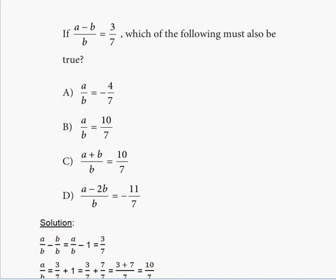It gives you a fraction and it says if a minus b divided by b is equal to three over seven, which of the following must also be true?